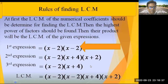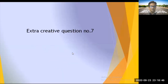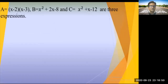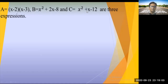In this way we find the LCM. Now today's lecture — we will solve Creative Question Number 7. Given: A = (x - 2)(x - 3), B = x² + 2x - 8, C = x² + x - 12.